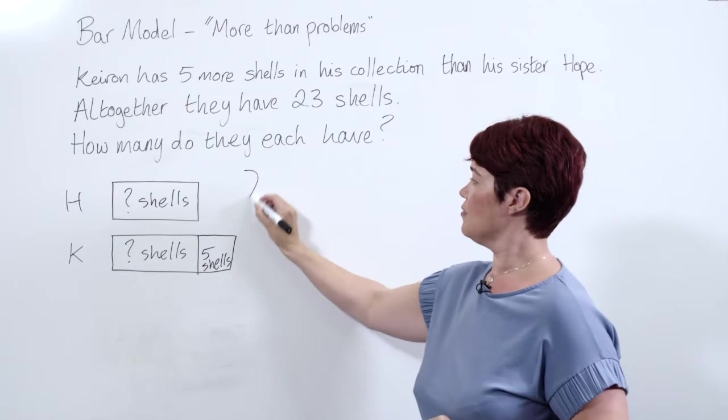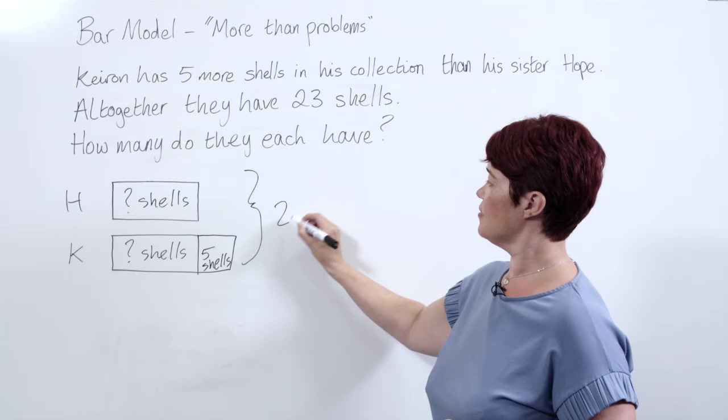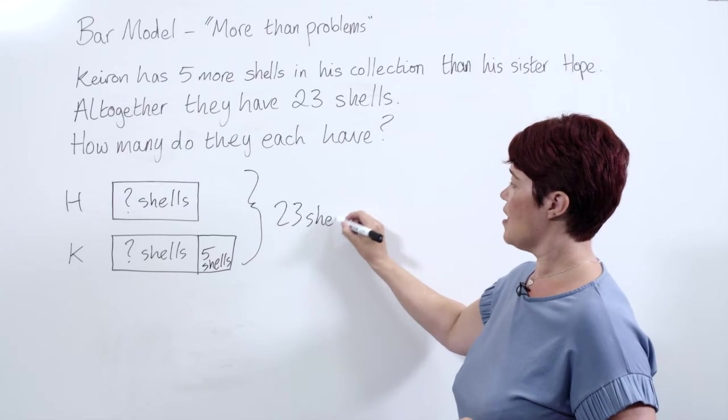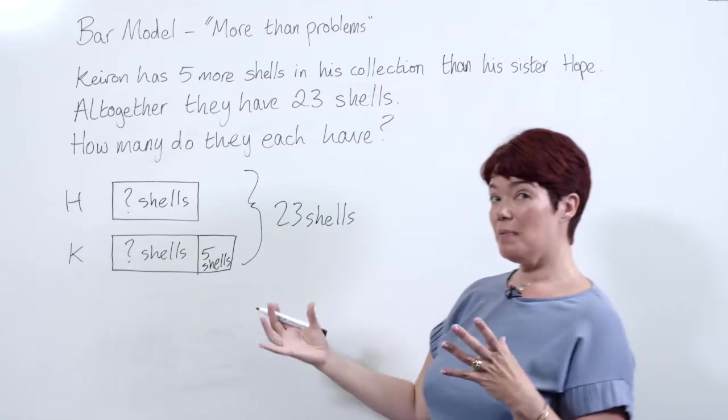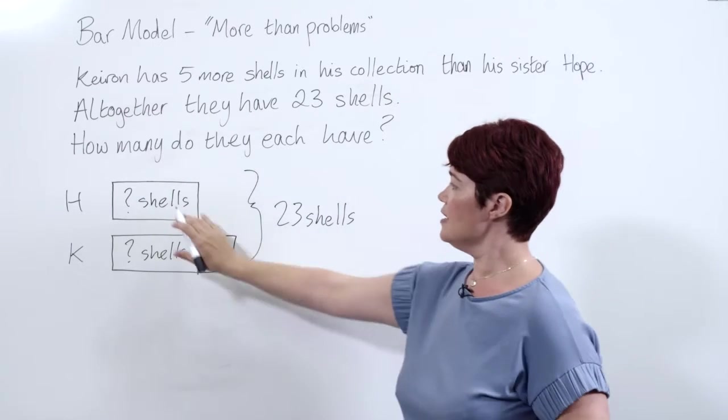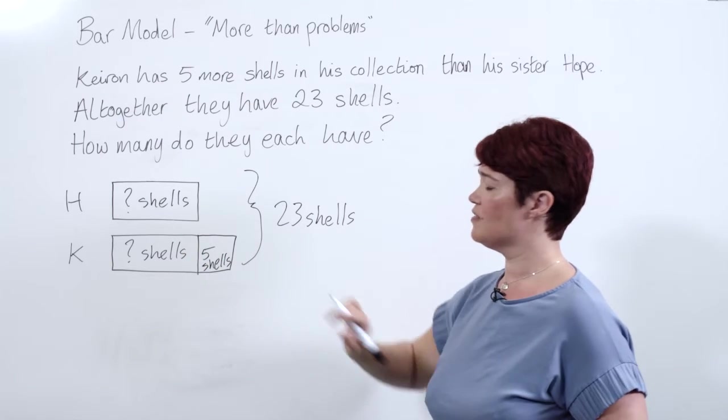Altogether they have 23 shells, so we know that those must add up to 23 shells. Now the bar makes it really clear, these are the same, we have these five extra.